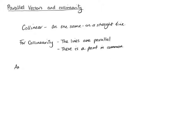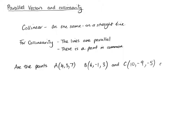So an example: are the points A(4, 3, 7), B(6, -1, 3), and C(10, -9, -5) collinear? What we have to do to solve collinearity questions is find the vector from A to B, find the vector from B to C, and then if they are parallel — they've got point B in common — which means that they are collinear.